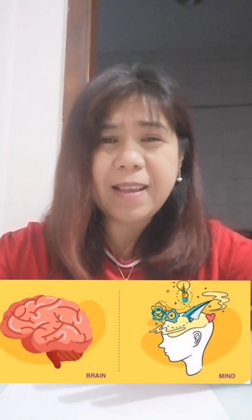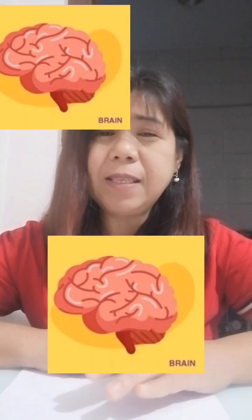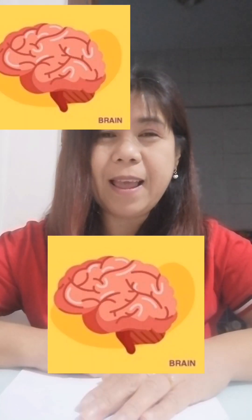So I hope you now know the difference between mind and brain. To summarize: the brain is a physical organ — it has size and shape, it can be weighed, and it makes up about 2% of our body weight. The brain is like the hardware of a computer.